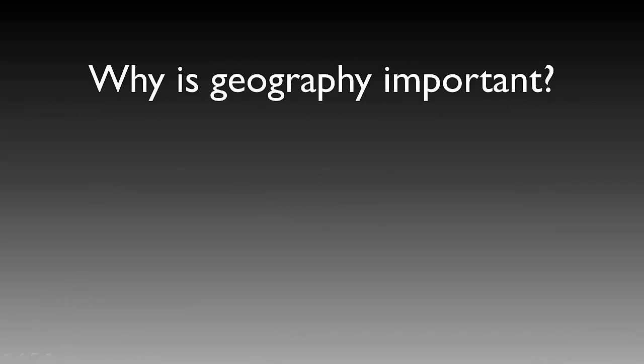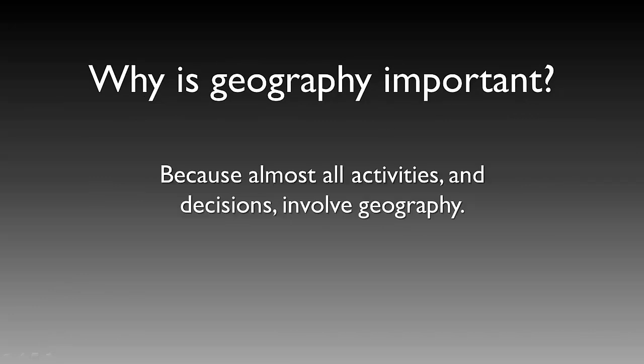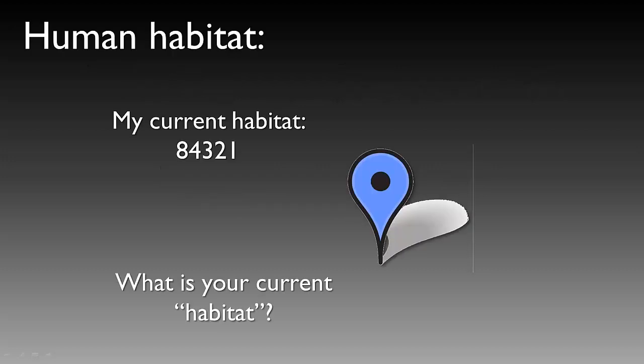It's a seemingly simple question and we can answer it with almost as simple of an answer: because almost all activities, decisions, or events involve geography in some way. A couple of examples that are a little easier to understand would be human habitat. It's a very spatial thing. We all have a specific habitat in which we live, and there are reasons we live there — perhaps work, kids, research, or going to school.